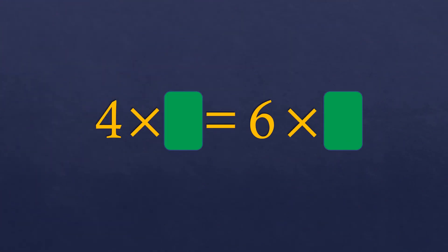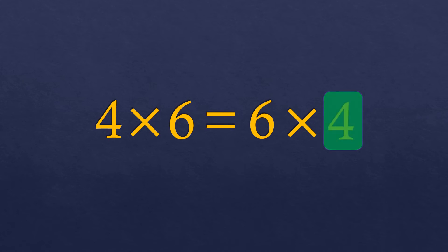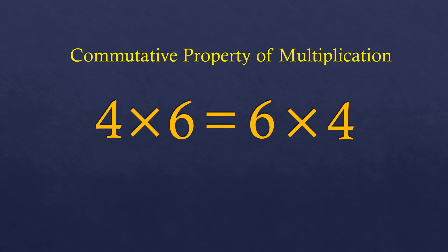Now let's have some equations with missing numbers shown in green boxes. We have 4 times blank equals blank times 4. Since there is a 6 on the right side, the missing number on the left must be 6, giving us 4 times 6 equals 6 times 4. That is according to the commutative property of multiplication.